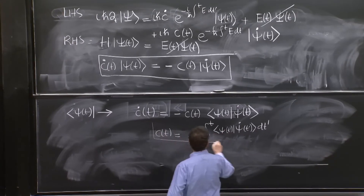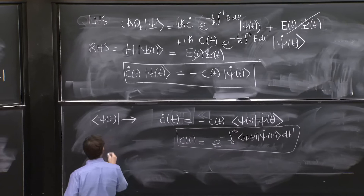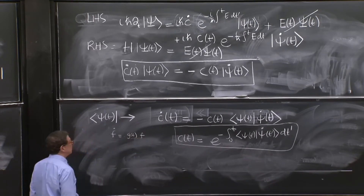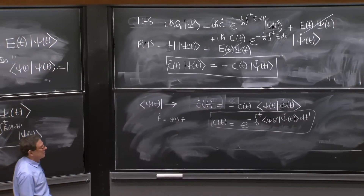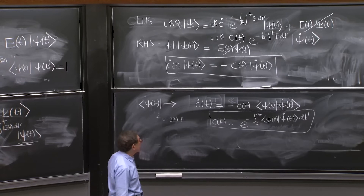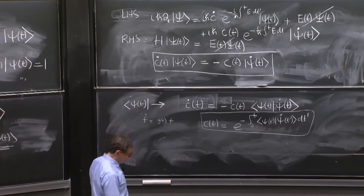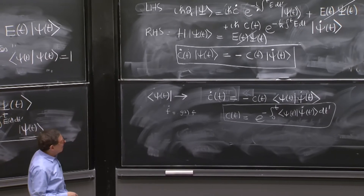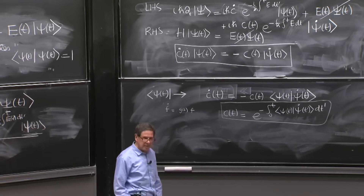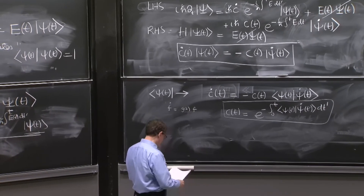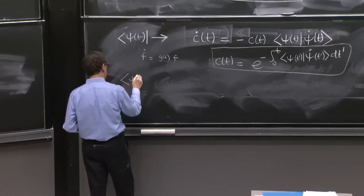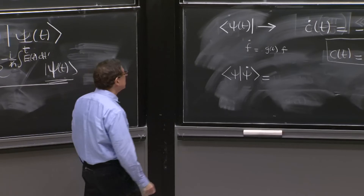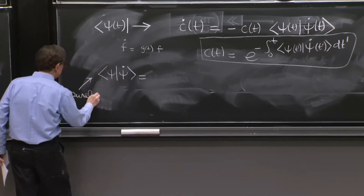Take the derivative and you see this is an equation of the form ḟ = (function of time) × f, solved by integration. Now, it looks like a decaying factor, but it's actually a phase. I claim the quantity ⟨ψ|ψ̇⟩ is purely imaginary. What is this thing? It's an overlap: ∫ dx ψ*(x,t) · ∂_t ψ(x,t). Let's see why it is purely imaginary.